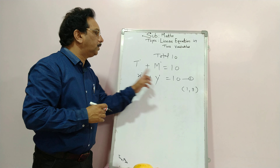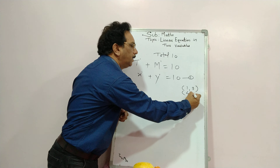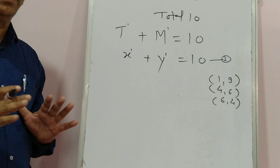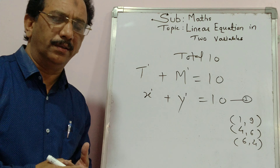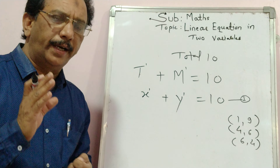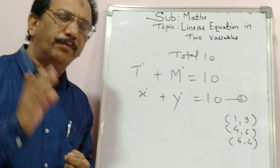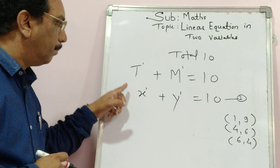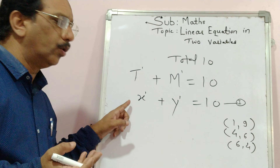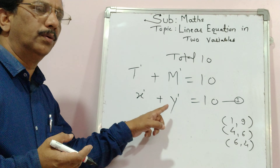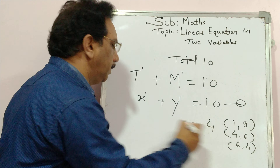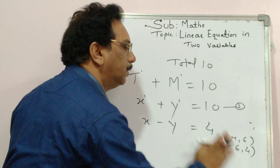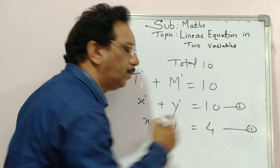For example, tomato could be 1 and mango 9 (since 1 plus 9 is 10). Another answer is 4 and 6, another is 6 and 4. So one equation has infinite solutions. Now to get a specific answer, let us add one more condition: the number of tomatoes is 4 more than mangoes, meaning the difference between the two is 4.